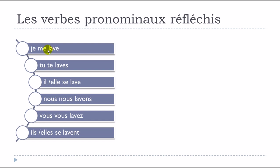Se laver is a regular verb belonging to the first group, so it has normal present tense endings. As it's a verbe pronominal, you add the reflexive pronoun: je me lave, tu te laves, il se lave, elle se lave. You should remember to always add these reflexive pronouns. Now let's see the passé composé form.